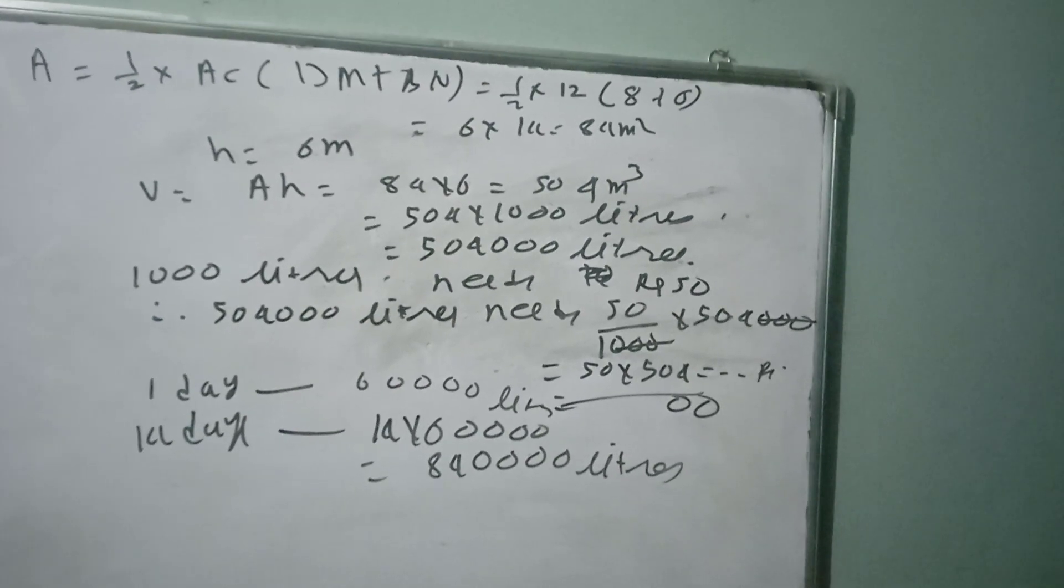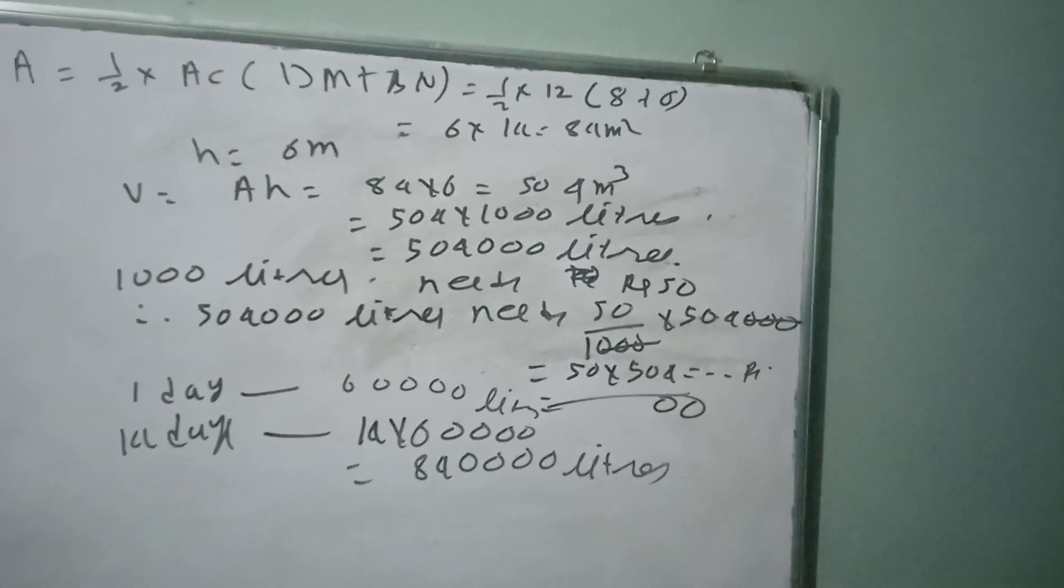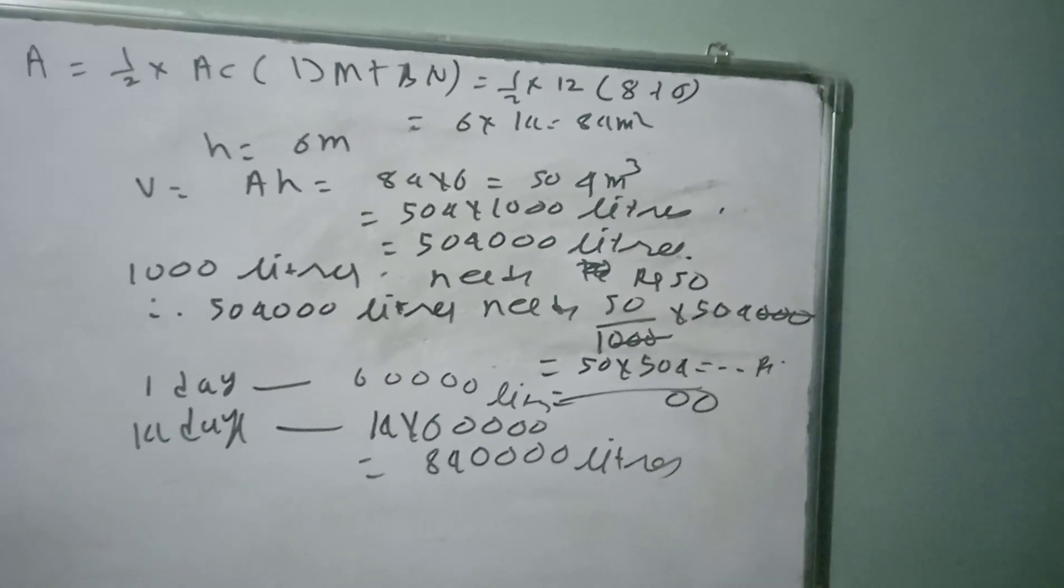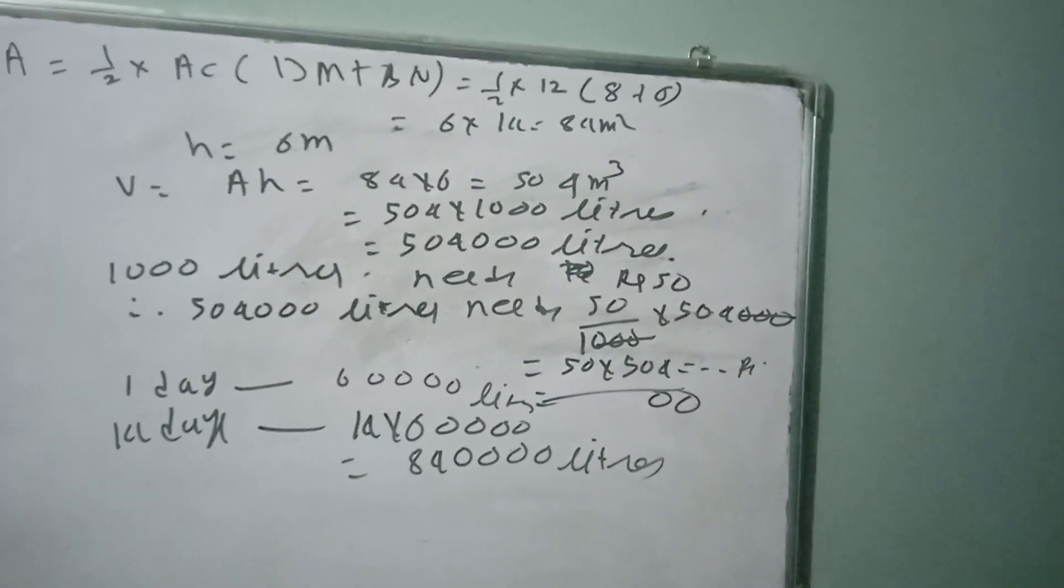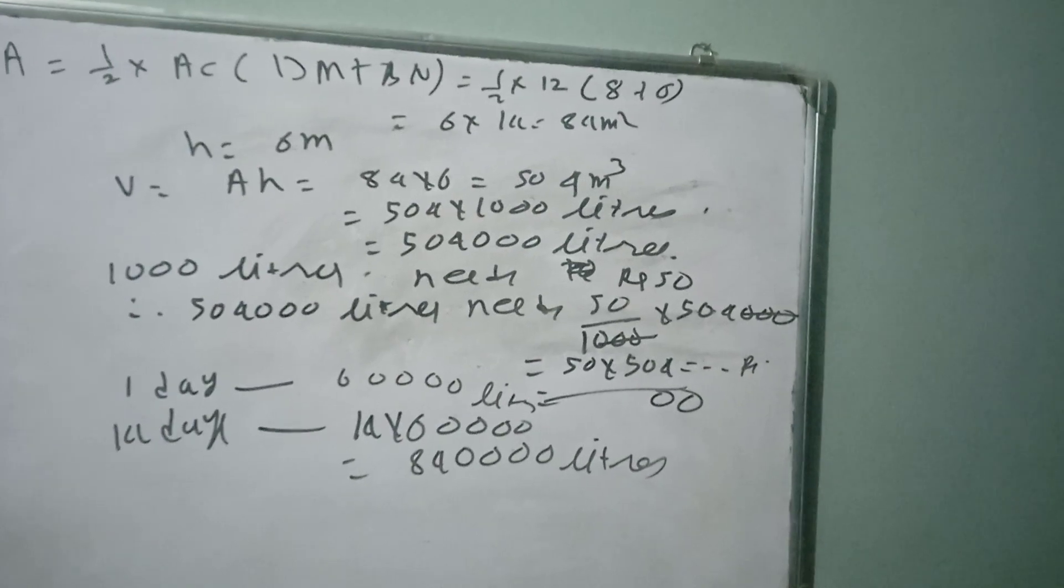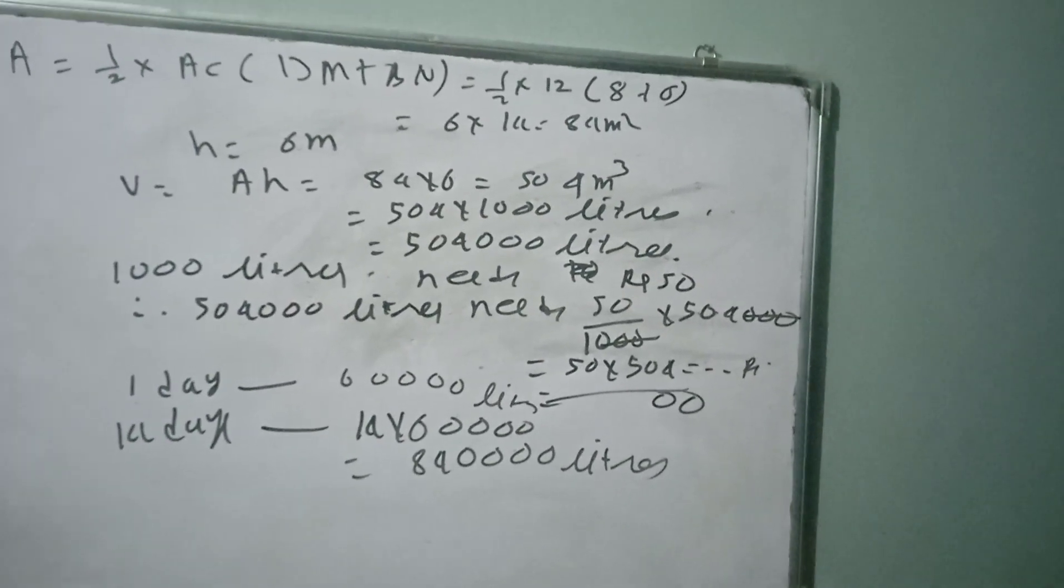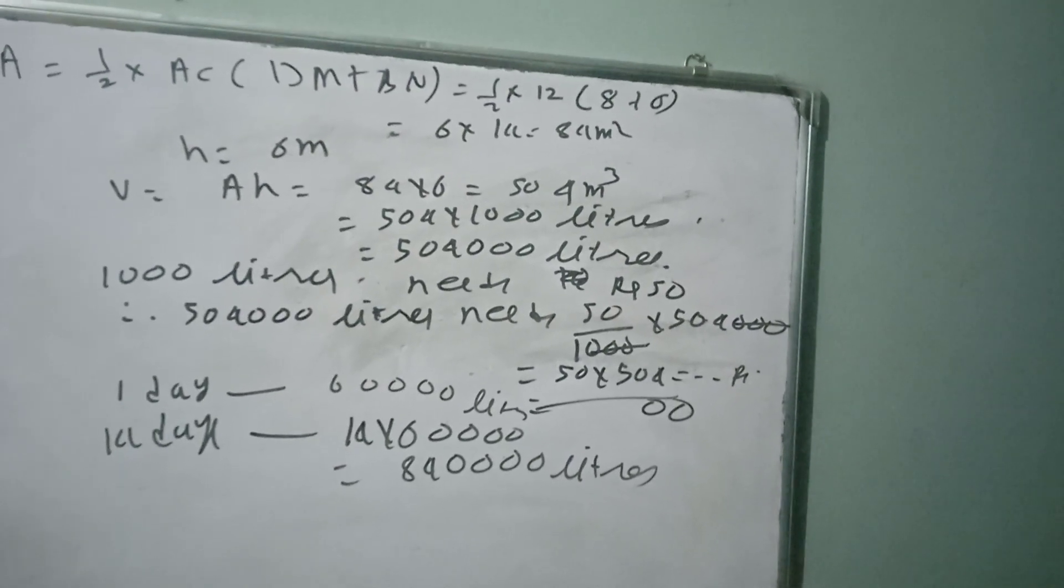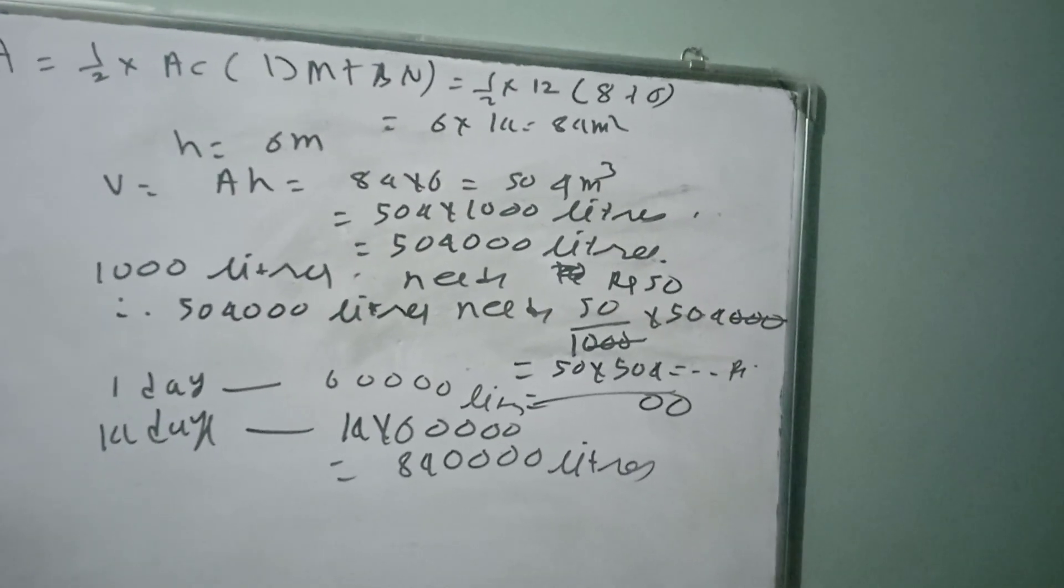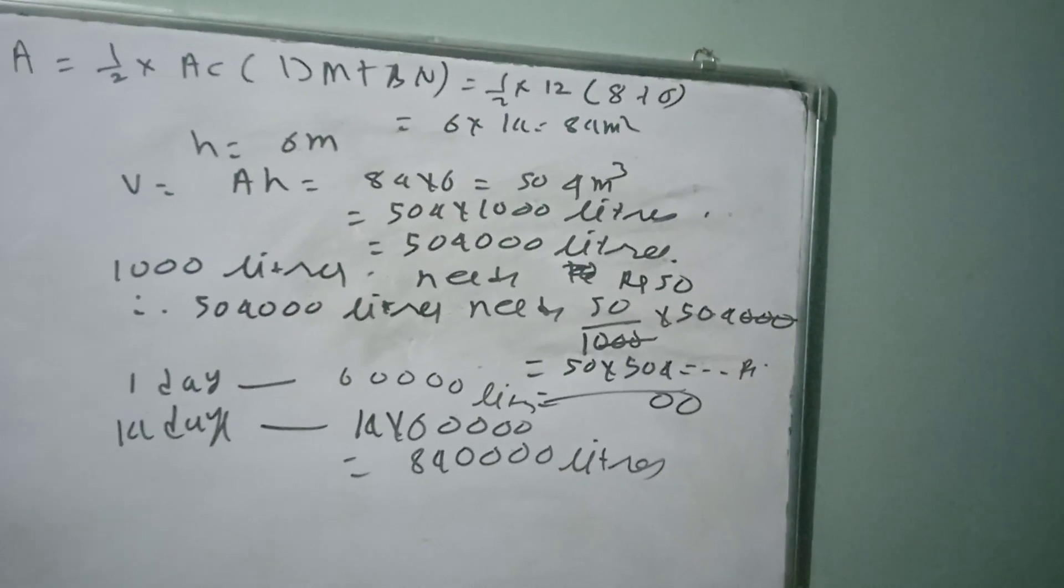1000 liters needs rupees 50, means rupees 50 is needed for 1000 liters or 1000 liters. For 504000 liters, 1000 liters needs rupees 50, 1 liter needs 50 upon 1000 rupees. That means unitary method.